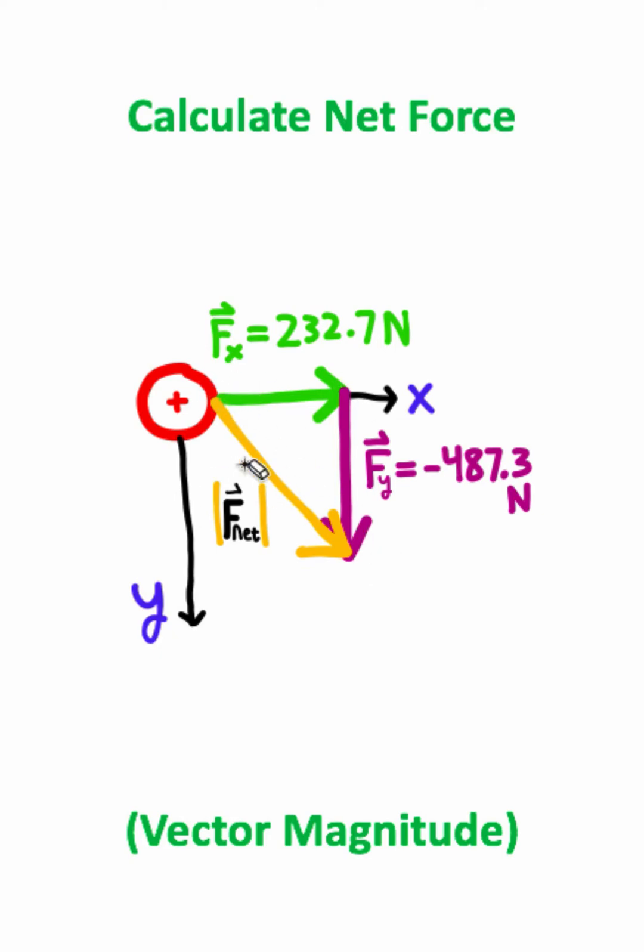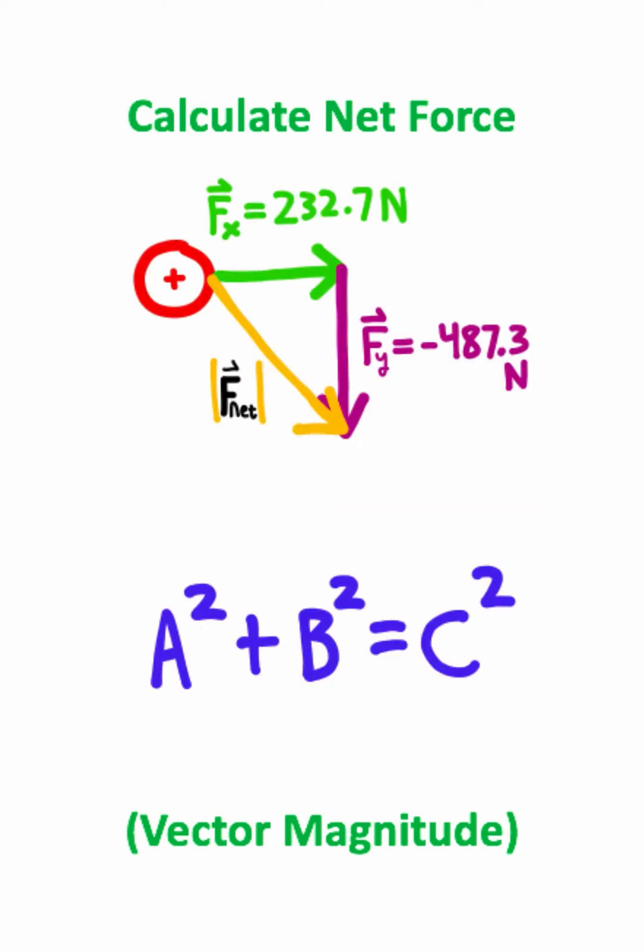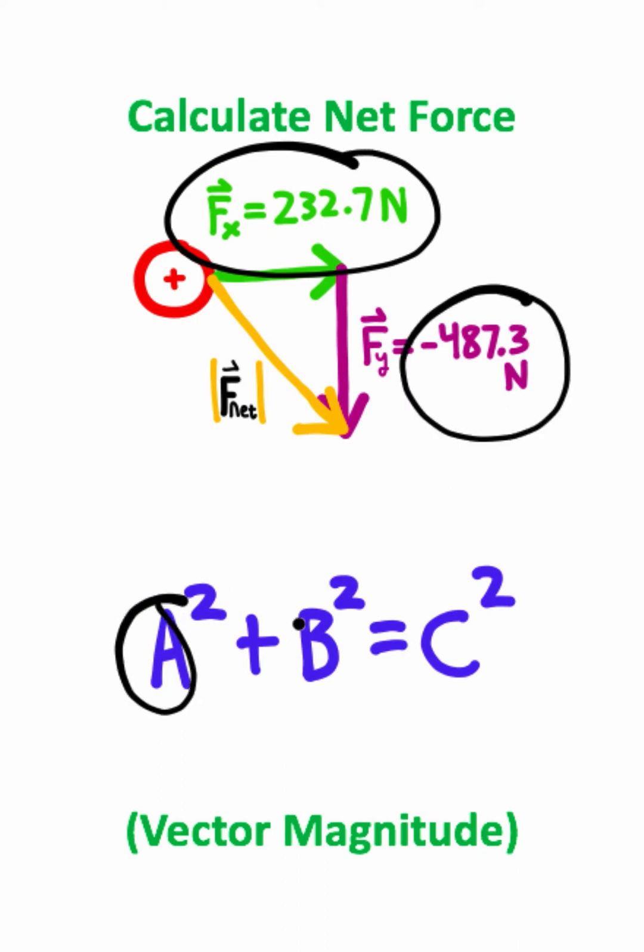That means if I want to find the magnitude of this net force, let's use the Pythagorean theorem on this right triangle. A squared plus B squared equals C squared. Now I can take 232.7 and plug it in for A, take negative 487.3 and plug it in for B, and then take my net force and plug it in for C.